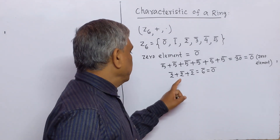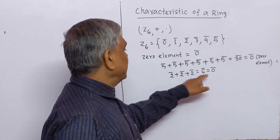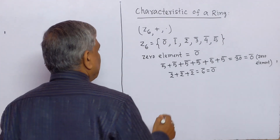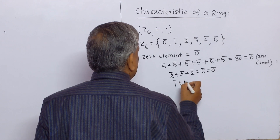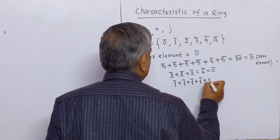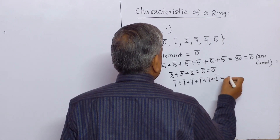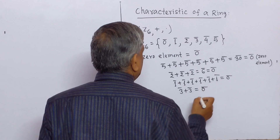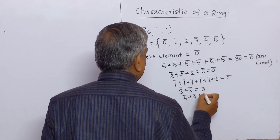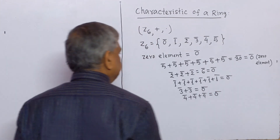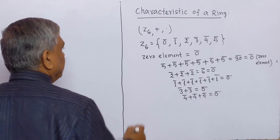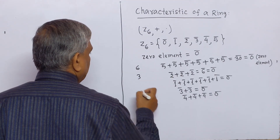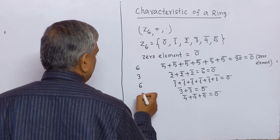Similarly, if we add 2-bar three times we get the zero element of the ring. Also, 1-bar added 6 times gives 0-bar; 3-bar plus 3-bar equals 0-bar; and 4-bar plus 4-bar plus 4-bar is also 0-bar. So for different elements we get: 6 times for 1-bar, 3 times for 2-bar, 6 times for 3-bar when done six times, 2 times for 4-bar, and 3 times for 5-bar... wait, correcting: 1-bar needs 6, 2-bar needs 3, 4-bar needs 3, and 5-bar needs 6 additions.